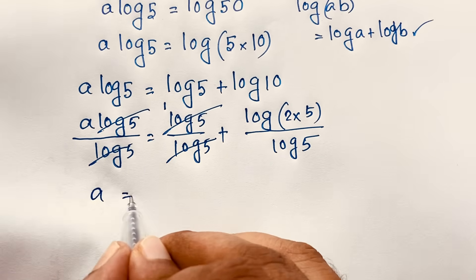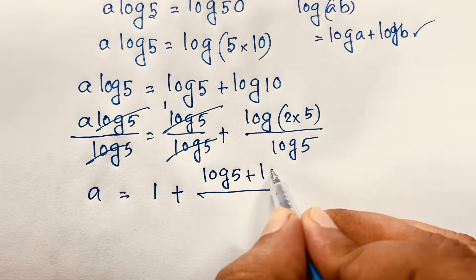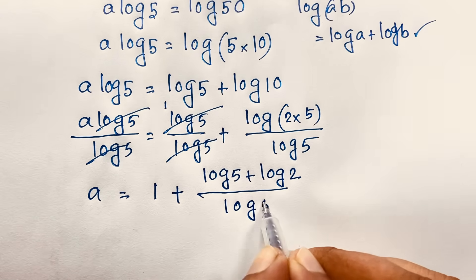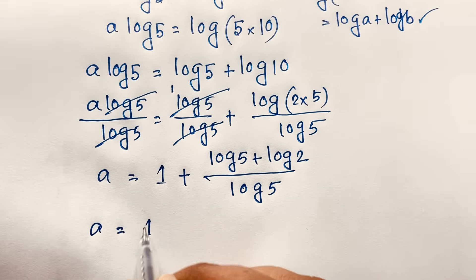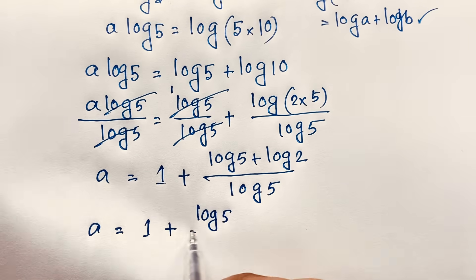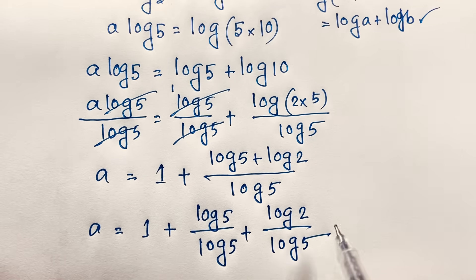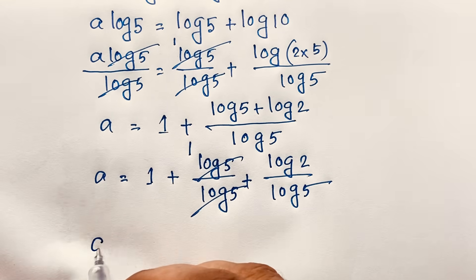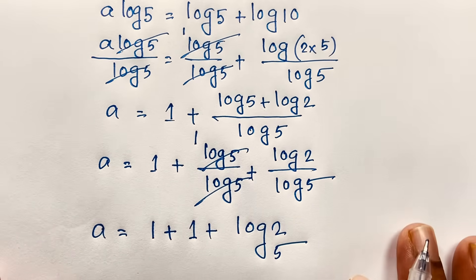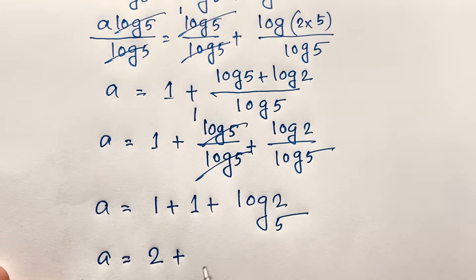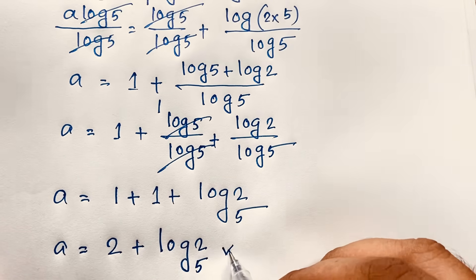So we find out a is equal to 1 plus log(5 × 2) over log 5. Applying the log rule again, it will be log 5 plus log 2 over log 5. Separating the fraction, a is equal to 1 plus log 5 over log 5 plus log 2 over log 5. This simplifies to a equals 1 plus 1 plus log 2 base 5, so a equals 2 plus log base 5 of 2. This is our final answer.